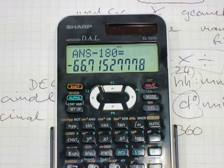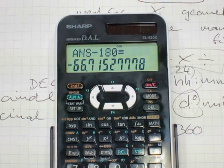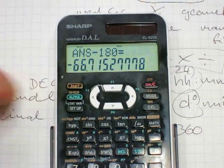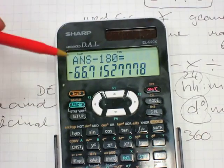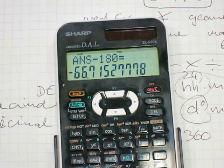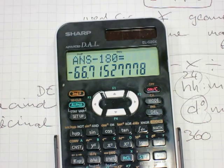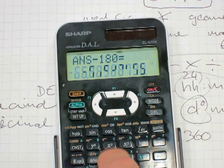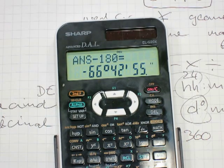So you go second function, and you get a little indicator that the second function has been pressed, and you hit the button. So the third angle in the triangle is 66 degrees, 42 minutes, and 55 seconds.